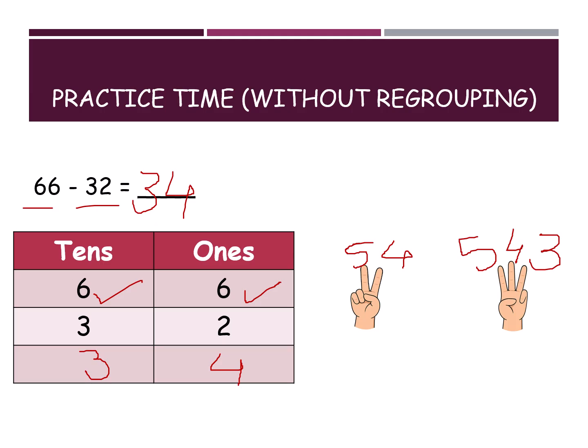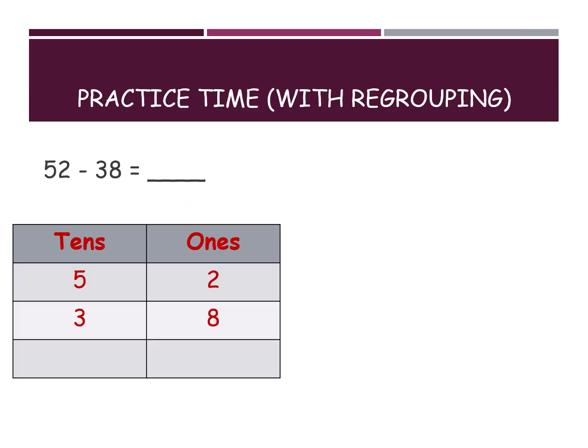Now it's a with-regrouping practice example. The numbers are 52 and 38. I have already divided into tens and ones. Take 30 seconds. Time starts now.